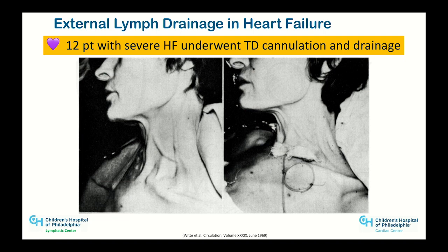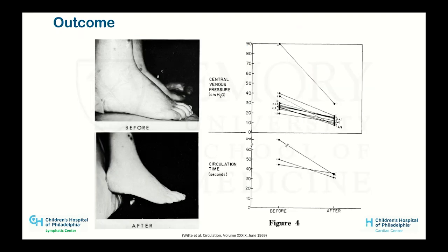Marlies Witte, one of the original lymphologists, is a very interesting person. She and her husband — who I call the original lymphologists — in 1969 took patients with severe congestive heart failure, put them in hospital, placed a plastic tube into the thoracic duct, and just drained them. All their heart failure symptoms went away, very quickly. Before and after images show dramatic resolution of edema. You can drain fluid out of the body extremely quickly. Central venous pressure goes down, circulation gets better — you're taking fluid out of tissue.